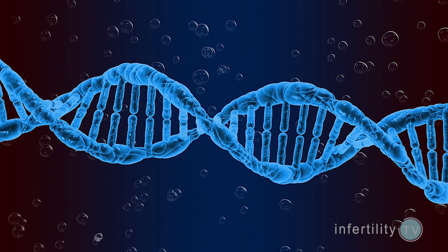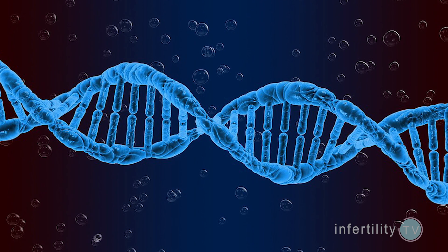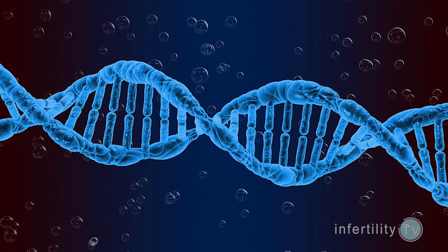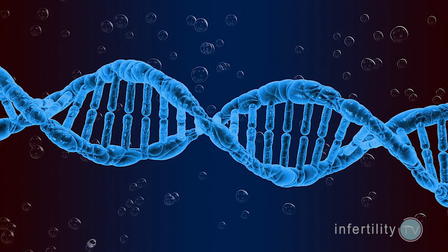Chromosomes are the part of the cell which contains genetic information. Even though there are only 23 different chromosomes, they contain tens of thousands of individual genes. Each of those genes does something — some genes are responsible for causing the embryo to divide, other genes control its ability to implant in the uterus, and others control the development of the fetus and its organs.